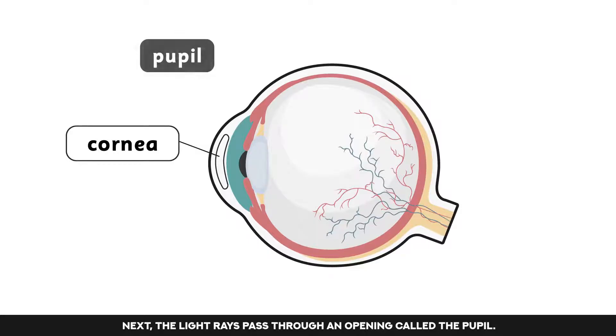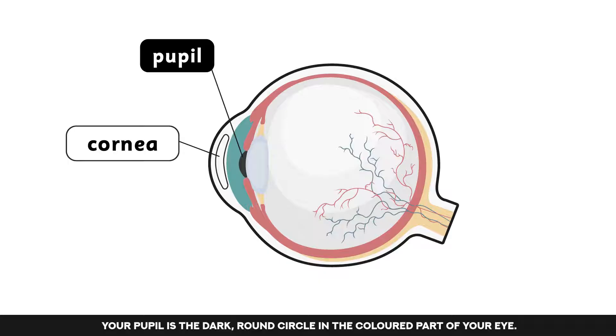Next, the light rays pass through an opening called the pupil. Your pupil is the dark round circle in the coloured part of your eye. The coloured part is called the iris.